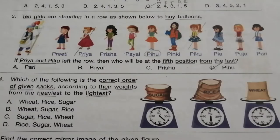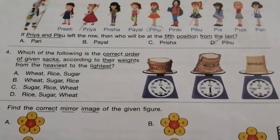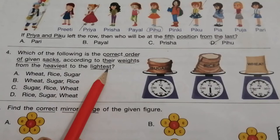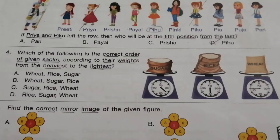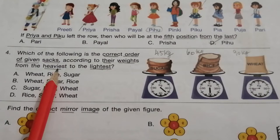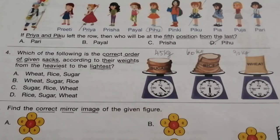Question 4: Which of the following is the correct order of given sacks according to their weights from heaviest to lightest? The weights are 90 kg, 60 kg, and 45 kg. Arranging from heaviest to lightest: wheat, rice, and sugar. The answer is A.